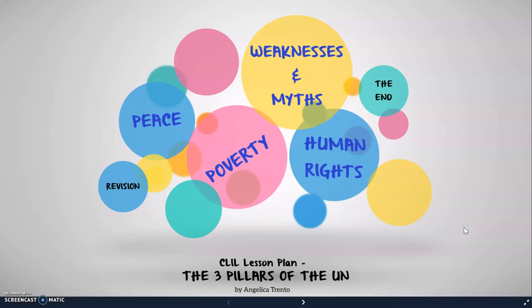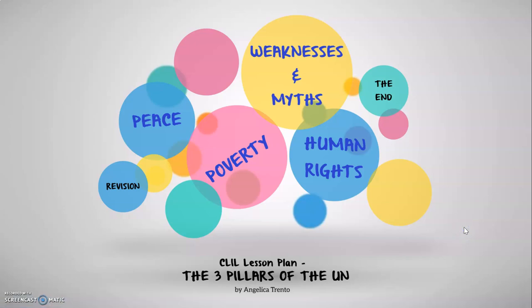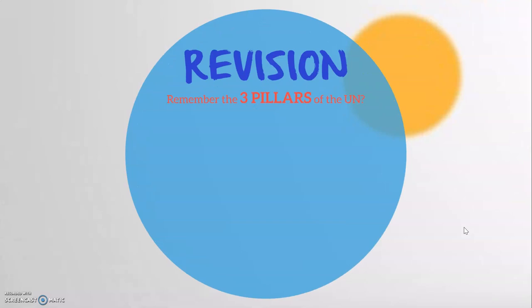Hello everyone, it's me again. In today's lesson we'll continue talking about the United Nations, but this time we will be focusing on how it operates. Do you remember the primary aims and main areas of the UN's work, which are also called the three pillars of the UN? We talked about them last time.